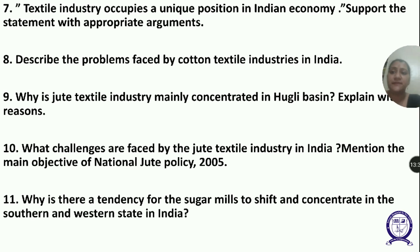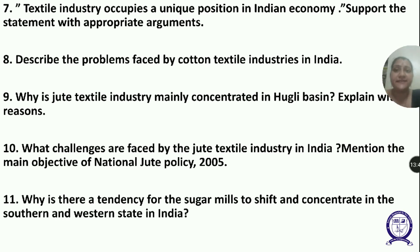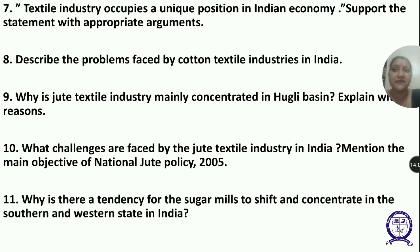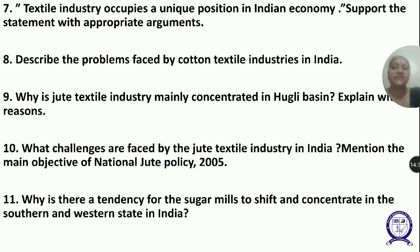Next question: Problems faced by the cotton textile industry. The industry has a fragmented structure dominated by small-scale companies. Outdated machinery needs to be upgraded, particularly in the weaving and processing sectors. Productivity is as low as one-third of what could be achieved. There is stiff competition from the synthetic fiber industry, which is available at cheaper rates. Also, erratic power supply is a major challenge for the cotton textile industry.